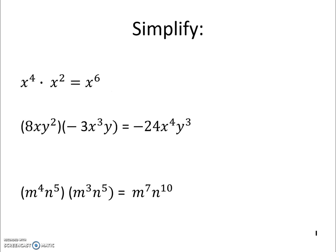Continuing to simplify, if we have x to the 4th times x squared, we add exponents, and we get x to the 6th. If we have 8xy squared times negative 3x cubed y, we take 8 times negative 3 to get negative 24. x times x cubed is simply x to the 4th, and y squared times y is y cubed.